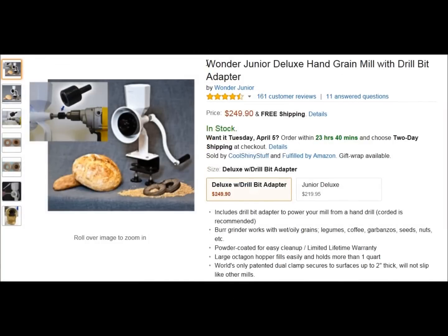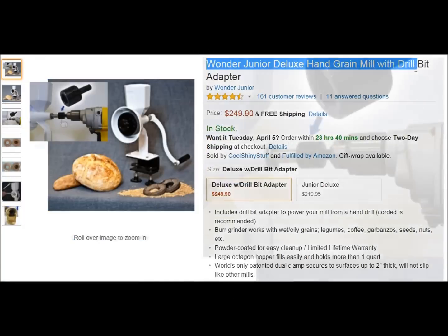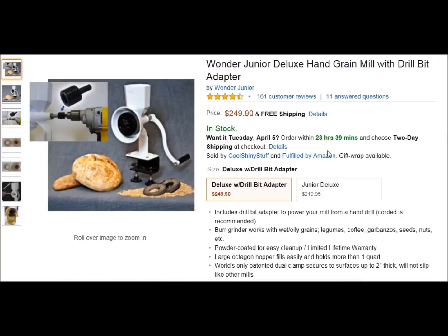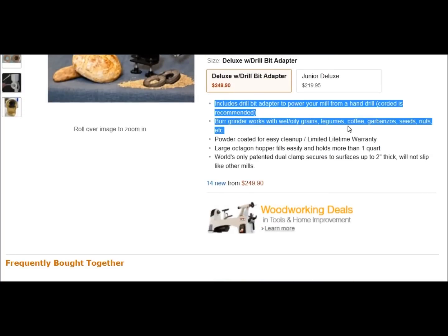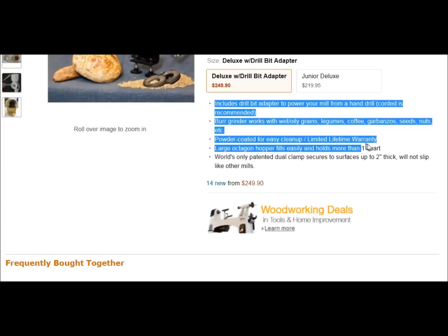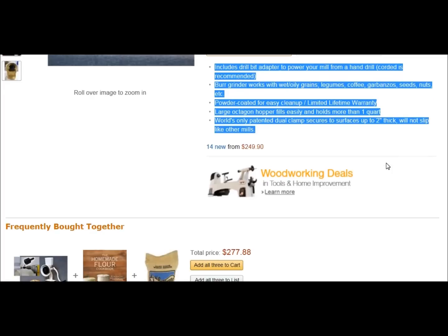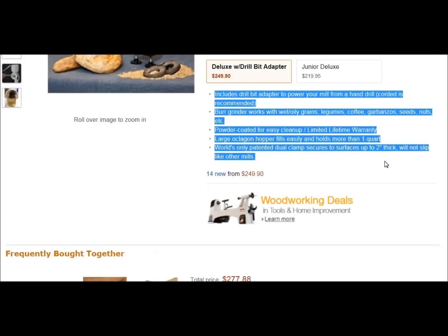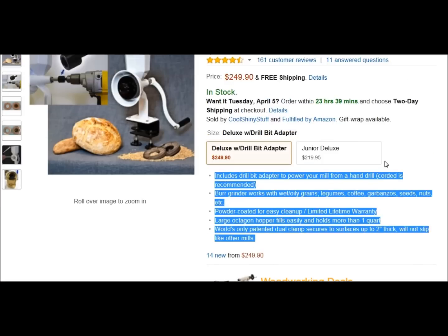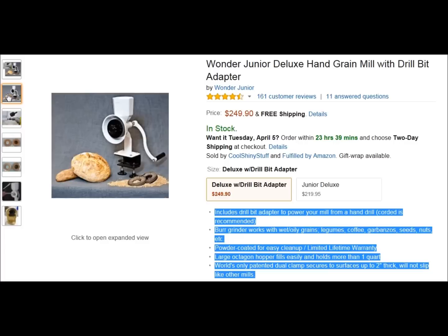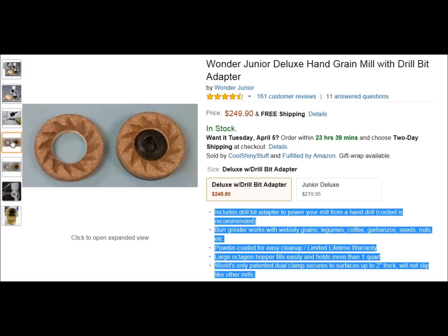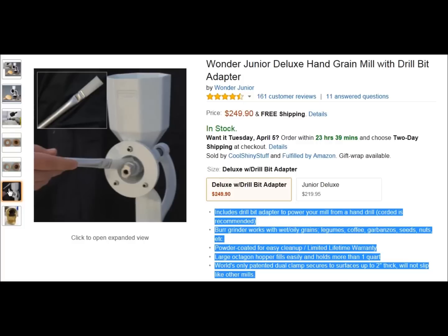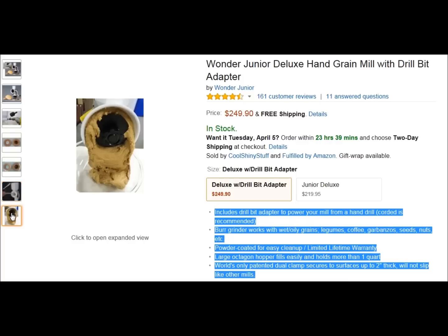However, the Wonder Mill Junior Deluxe came with all of that. The ability to be motorized using an electric drill, steel plates for making peanut butter, steel milling heads for making flour, and the countertop clamp, all for the price of around $250. And from the research that I've done, while I found that the Country Living Mill was better than the Wonder Mill Junior Deluxe, it just wasn't $600 better. So I felt the Wonder Mill Junior Deluxe was going to give me the best bang for my buck.